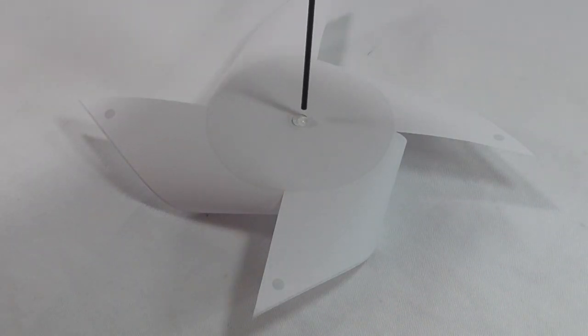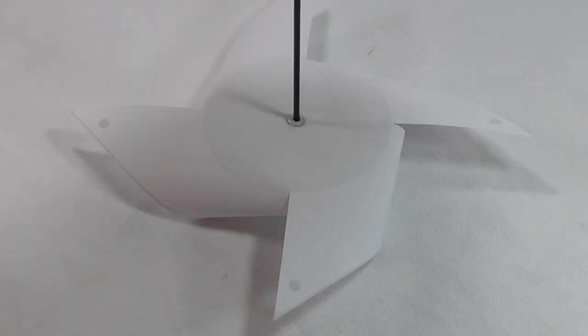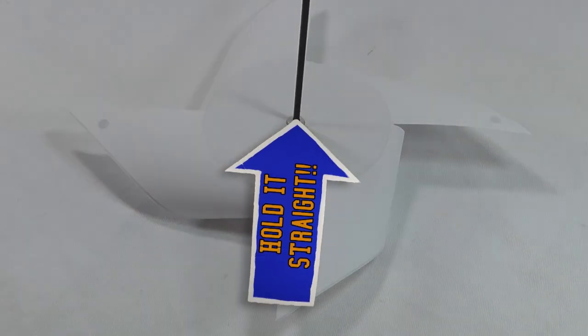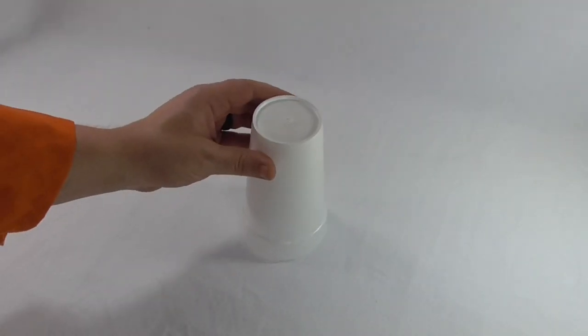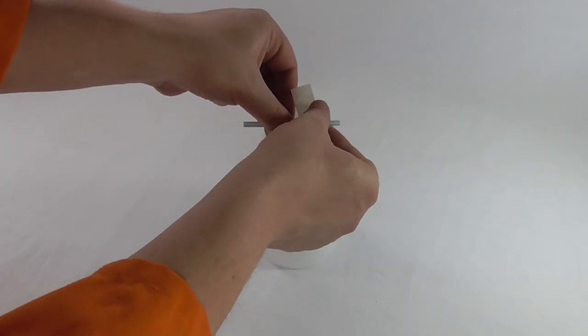Put a glob of hot glue onto the back of the pinwheel. Hold the coffee stirrer in place perpendicular to the back of the pinwheel until the glue cools. Cut the drinking straw to eight centimeters.